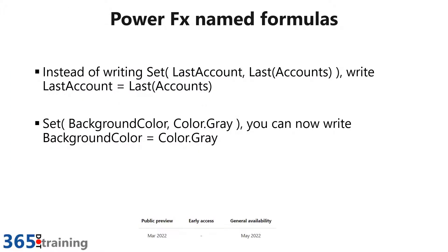Next up is Power FX named formulas. In the past, you had to spell out the whole thing — for example, writing Set(accountVar, Last(accounts)) to get the last account into a variable. Now you can write LastAccounts = Last(accounts), giving Power FX the optimization capability of deciding when it will be used and optimizing that access. This can also be used for simple things like instead of Set(backgroundColor, gray), you can now just say backgroundColor = gray. We'll see more on the syntax as it comes into public preview in March 2022, with general availability in May 2022.